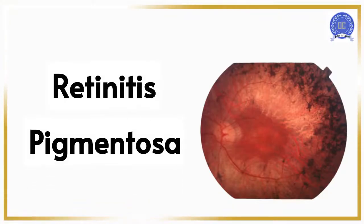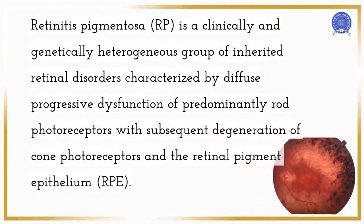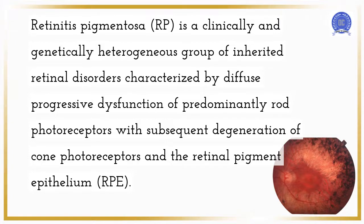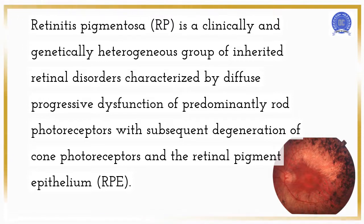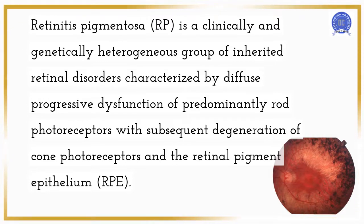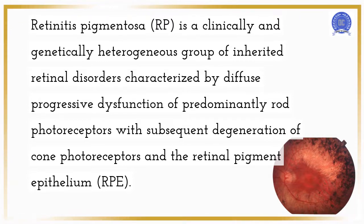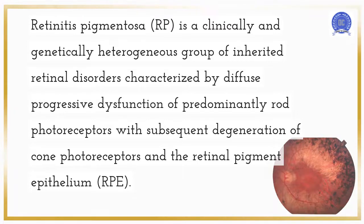Retinitis Pigmentosa, RP, is a clinically and genetically heterogeneous group of inherited retinal disorders characterized by diffuse progressive dysfunction of predominantly rod photoreceptors, with subsequent degeneration of cone photoreceptors and the retinal pigment epithelium, RPE.